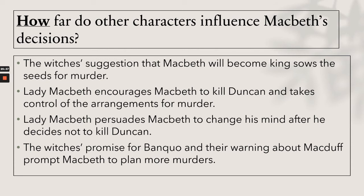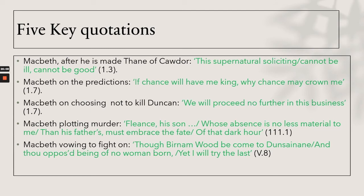Other characters influence Macbeth's decisions: the witches' suggestion that Macbeth will become king sows the seeds for murder. Lady Macbeth encourages Macbeth to kill Duncan and takes control of the arrangements. She persuades him to change his mind after he decides not to kill Duncan. The witches' promises regarding Banquo and their warning about Macduff prompt Macbeth to plan more murders. Five key quotes: Macbeth after being named Thane of Cawdor — 'The supernatural soliciting cannot be ill, cannot be good.' Macbeth on the predictions — 'If chance will have me king, why, chance may crown me.' Macbeth choosing not to kill Duncan — 'We will proceed no further in this business.' Macbeth plotting Fleance's murder — 'whose absence is no less material to me than his father's, must embrace the fate of that dark hour.' Macbeth vowing to fight on — 'Though Birnam Wood be come to Dunsinane, and thou opposed, being of no woman born, yet I will try the last.'